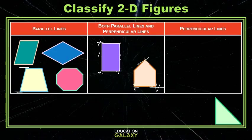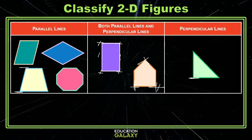And lastly, this triangle has one right angle, which means it does have a pair of perpendicular lines. You see them here.